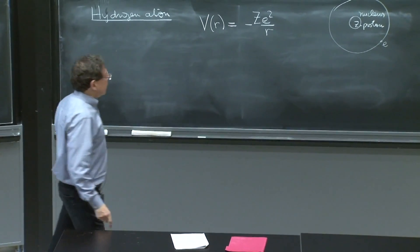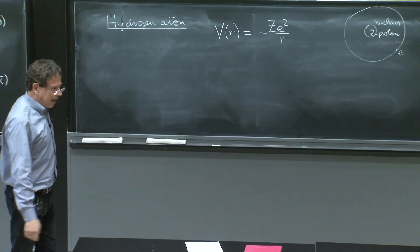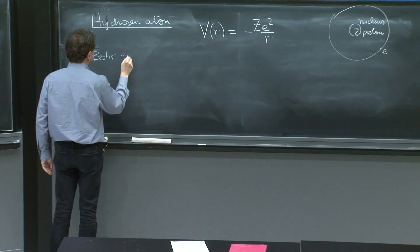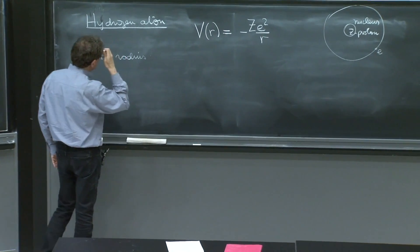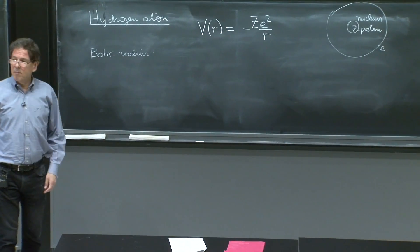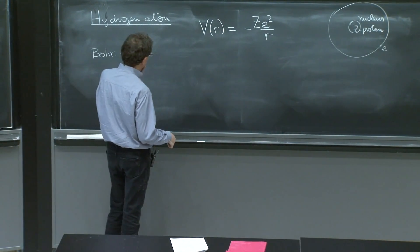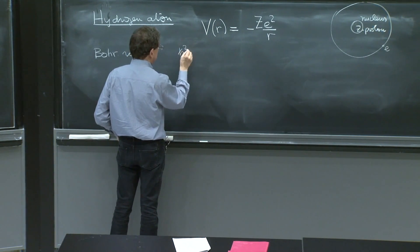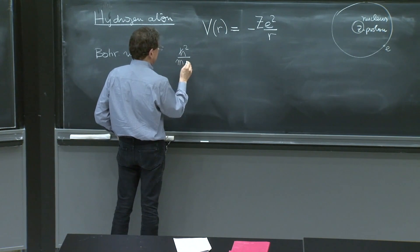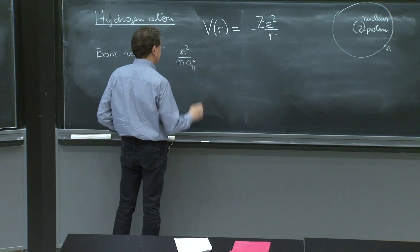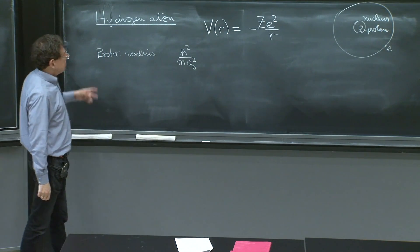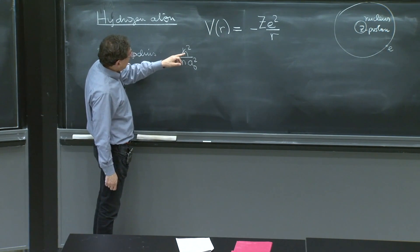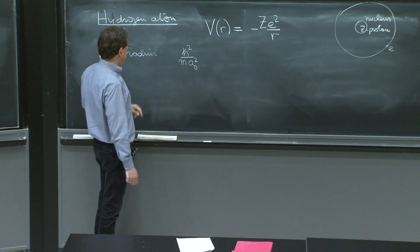So a few numbers. We've done some of these numbers before, but the Bohr radius. One way of calculating the Bohr radius is to just think of units and think of energy. Energy goes like h squared over m a squared. This has units of energy. You remember p squared over 2m. And p is h over distance. So if you have a Bohr radius a0, this quantity has units of energy.